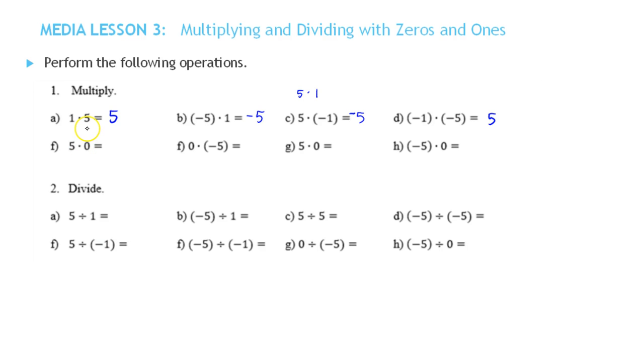These ones are all easy. 5 times 0 is 0. Any number times 0 is 0. Multiplying any number by 0 is 0.